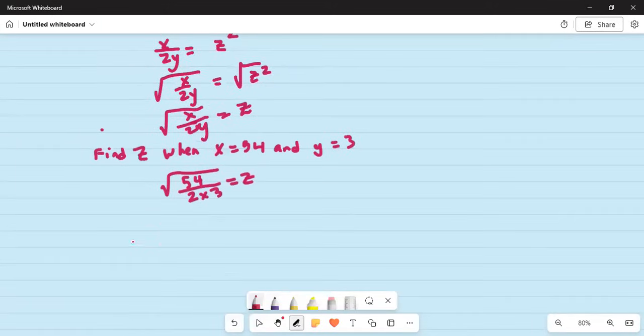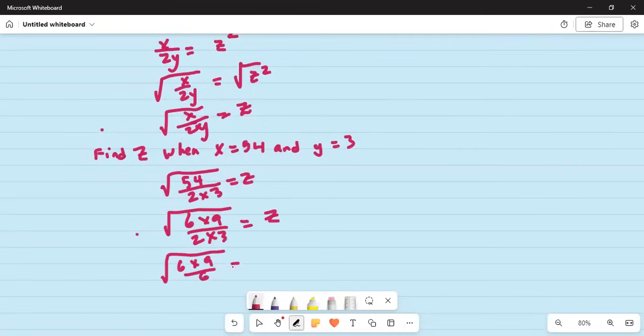That square root of now 54 can be written as 6 multiplied by 9 divided by 2 times 3 is equal to z. Why did I do it like this? Because then 6 cancels with 6. 6 in the numerator cancels with 6 in the denominator and we are left with...